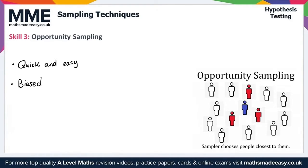The diagram on the right shows a brief example of opportunity sampling, where the blue person is the sampler and they hand the survey out to the closest people to them. That gives us everything we need for skill three on opportunity sampling.